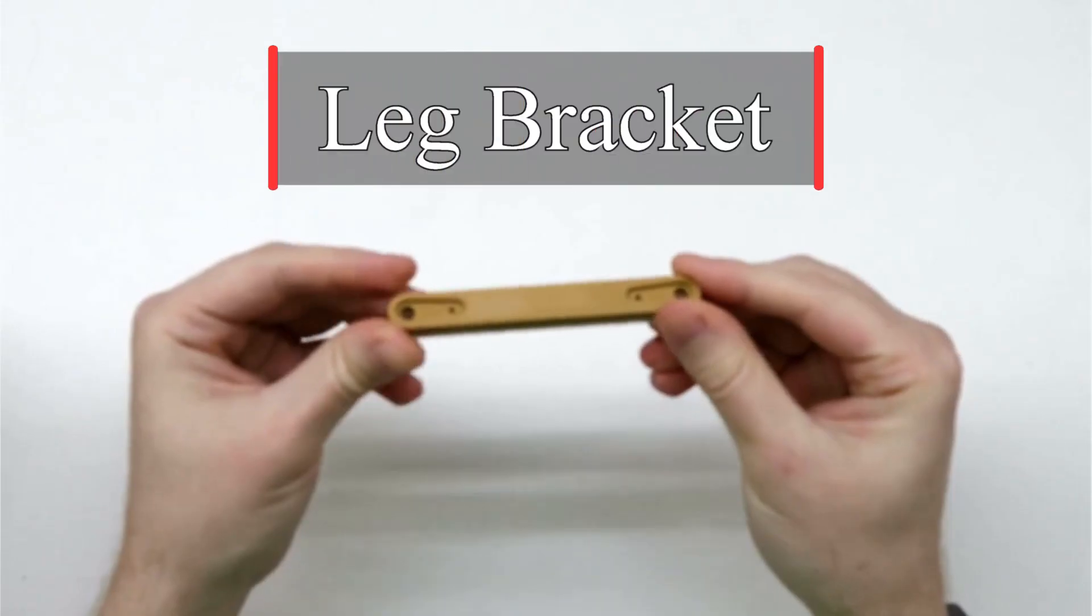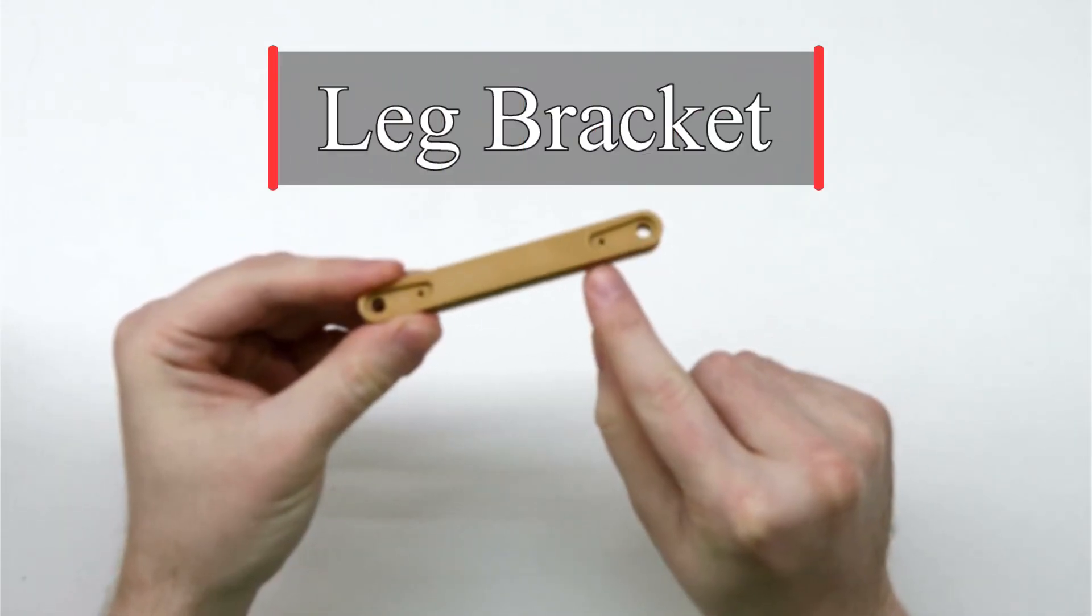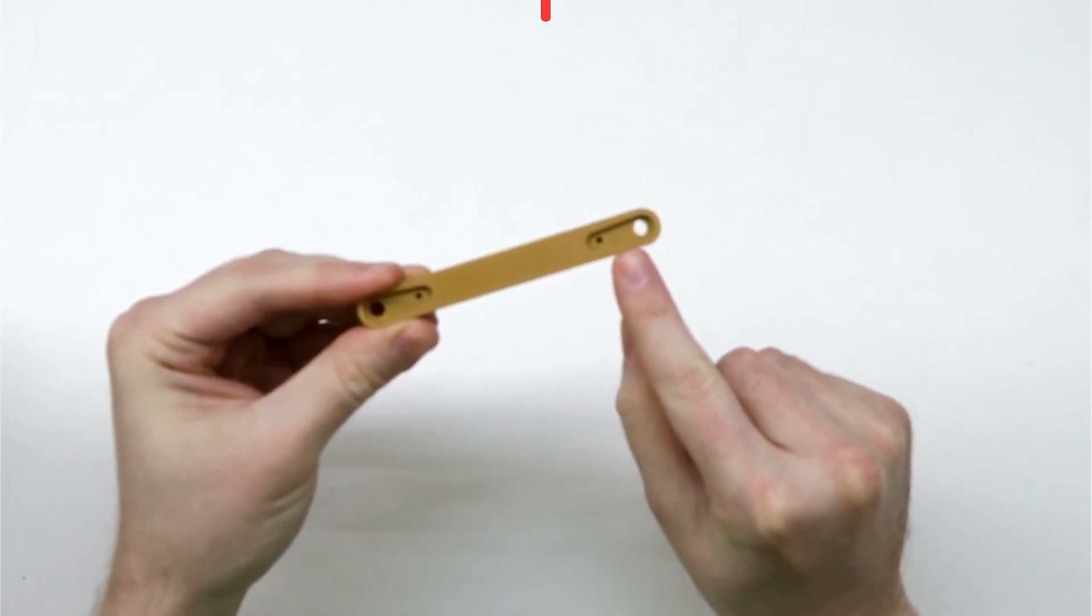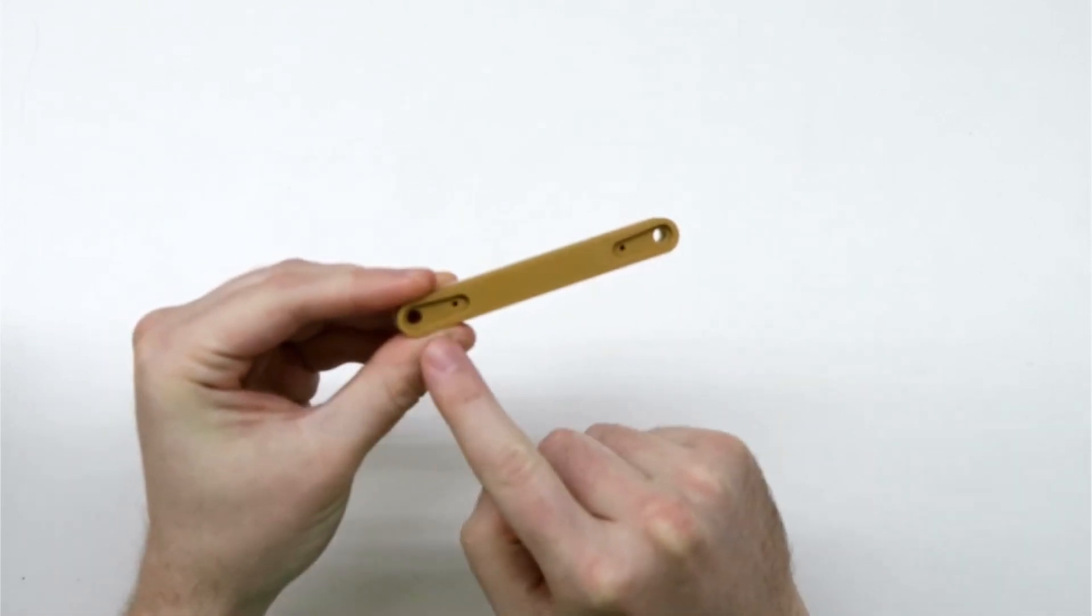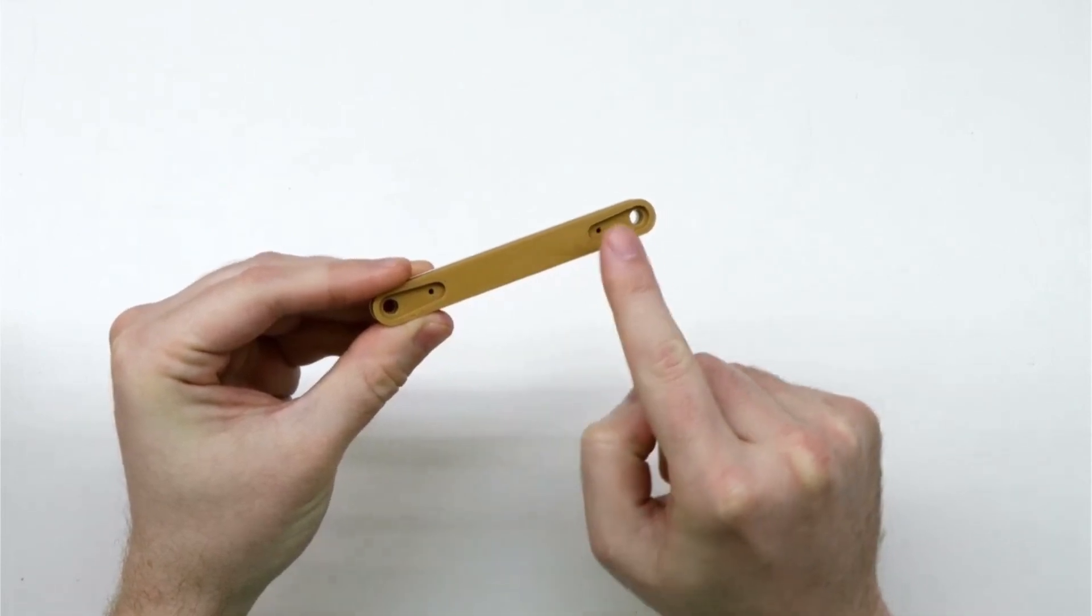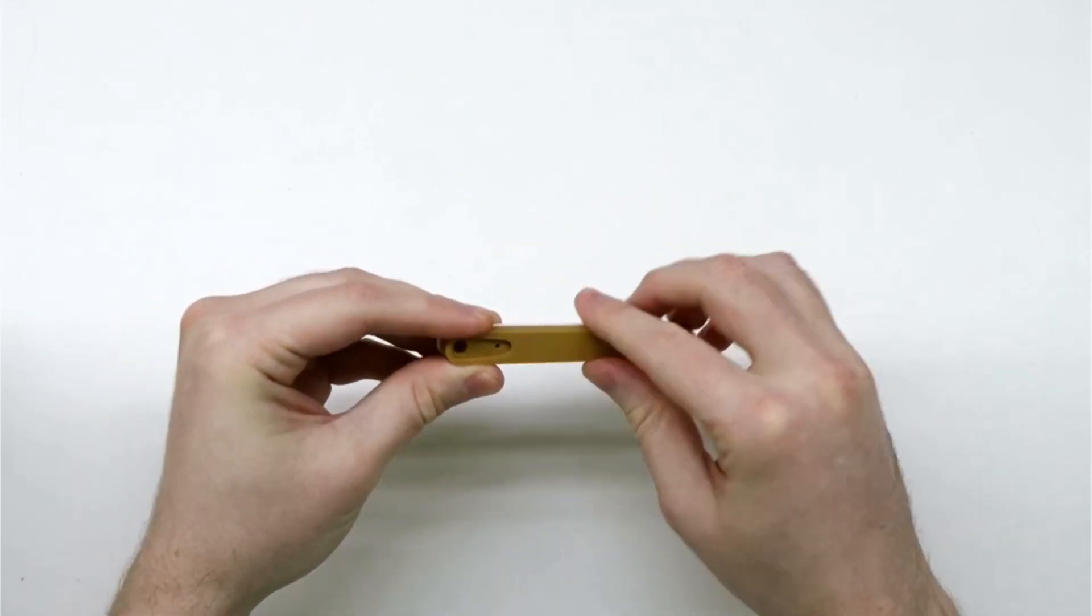The leg piece for this robot is very simple. It is also completely symmetric so that I can use this one design for both the right and left legs. Each side contains an indent for a servo horn, with a small hole on the opposite side for a set screw.